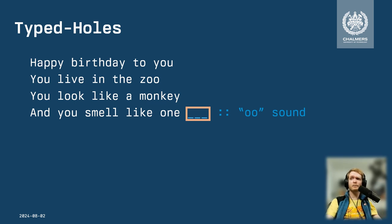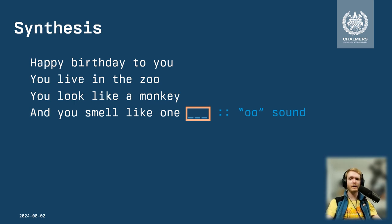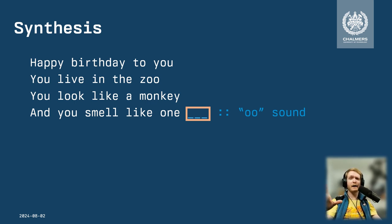Now that we know what part of the program is wrong and what shape that part should have, we can try coming up with some replacements. This process is called synthesis — when you have some specification, in this case the types, and you try to come up with something that fits that specification.